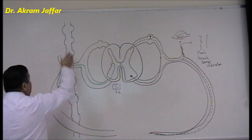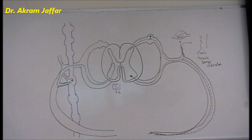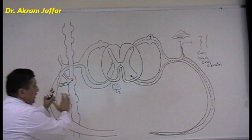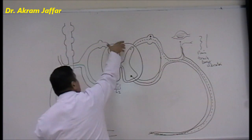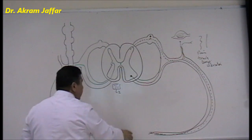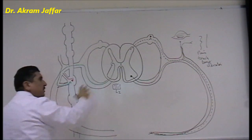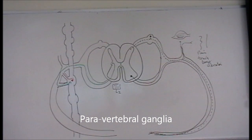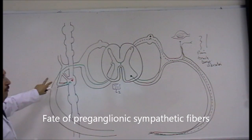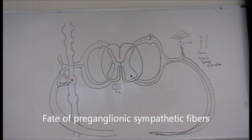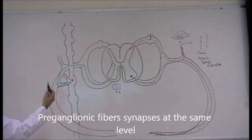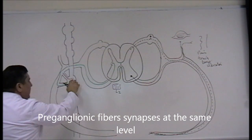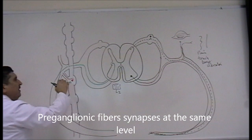This sympathetic ganglion can be part of the sympathetic trunk, in which case it is called a paravertebral ganglion, because it is located on either side of the vertebral column. Now, there are three options for the fate of preganglionic fibers. The first option is where the preganglionic fiber synapses with a postganglionic neuron at the same level.